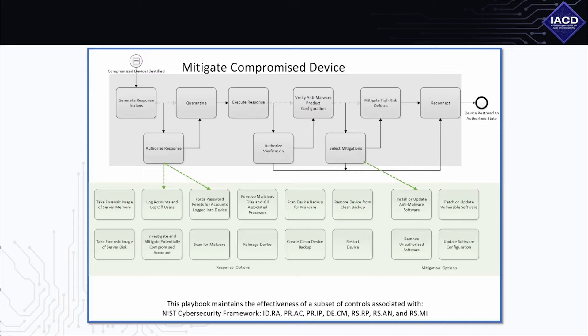The first type of content found in an IACD playbook is the initiating condition. An organization adopts many different security processes and procedures where each one is invoked in response to a different predefined condition — for example, a compromised device has been identified, as in the example here, or a server is not responding. This predefined condition is the initiating condition for a playbook.